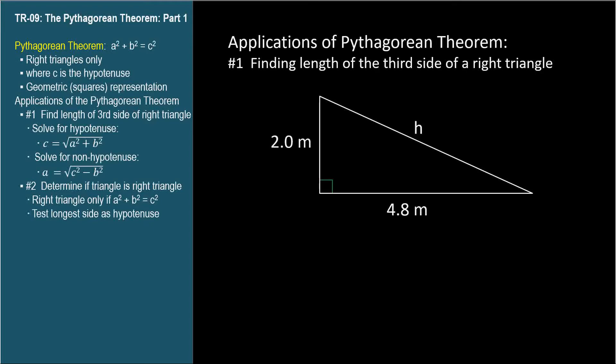For example, what's the length of the hypotenuse h of this right triangle if the shorter sides are 2.0 meters and 4.8 meters?